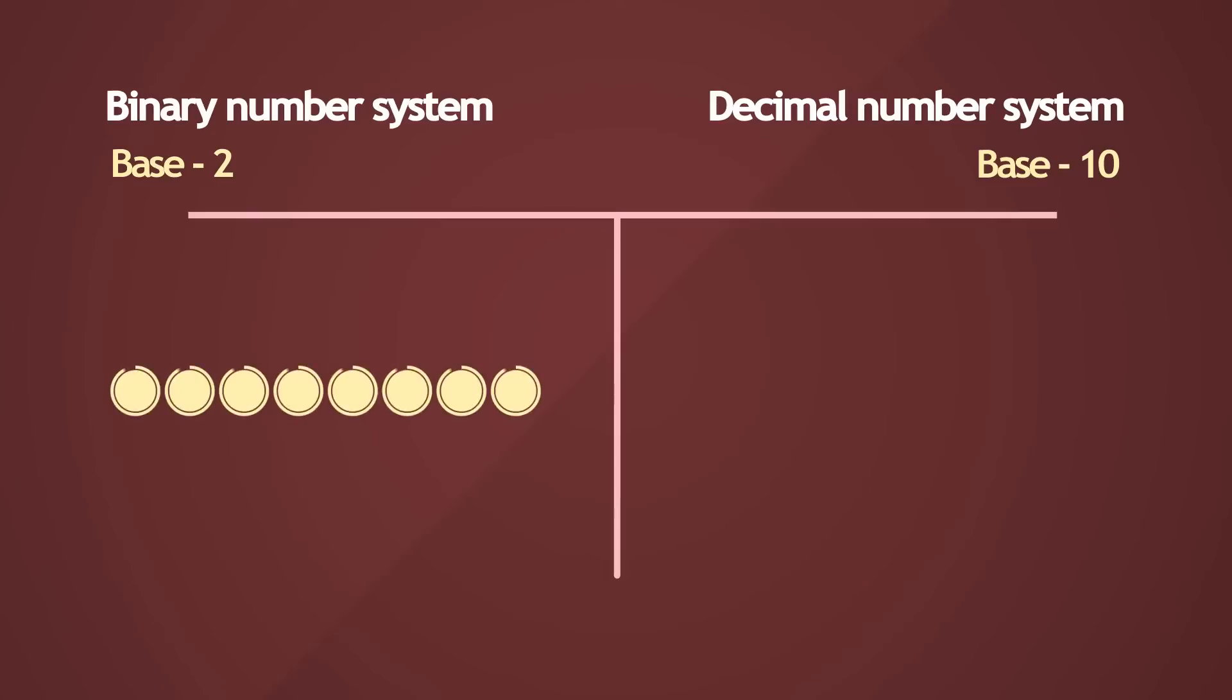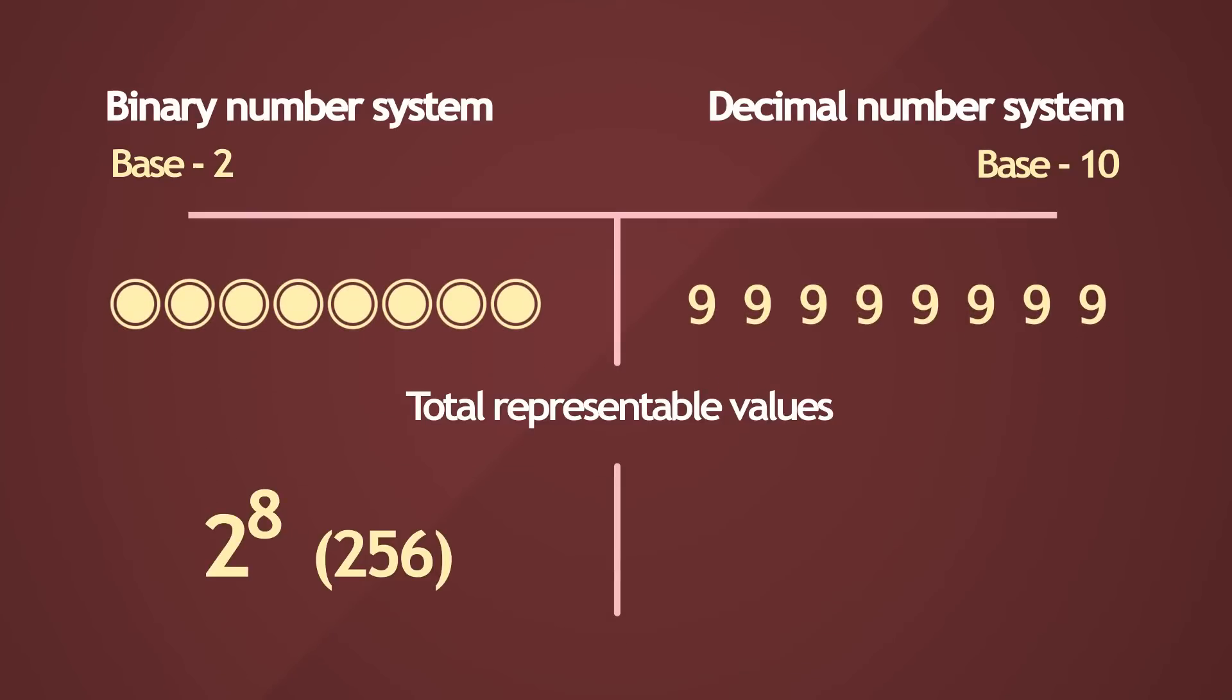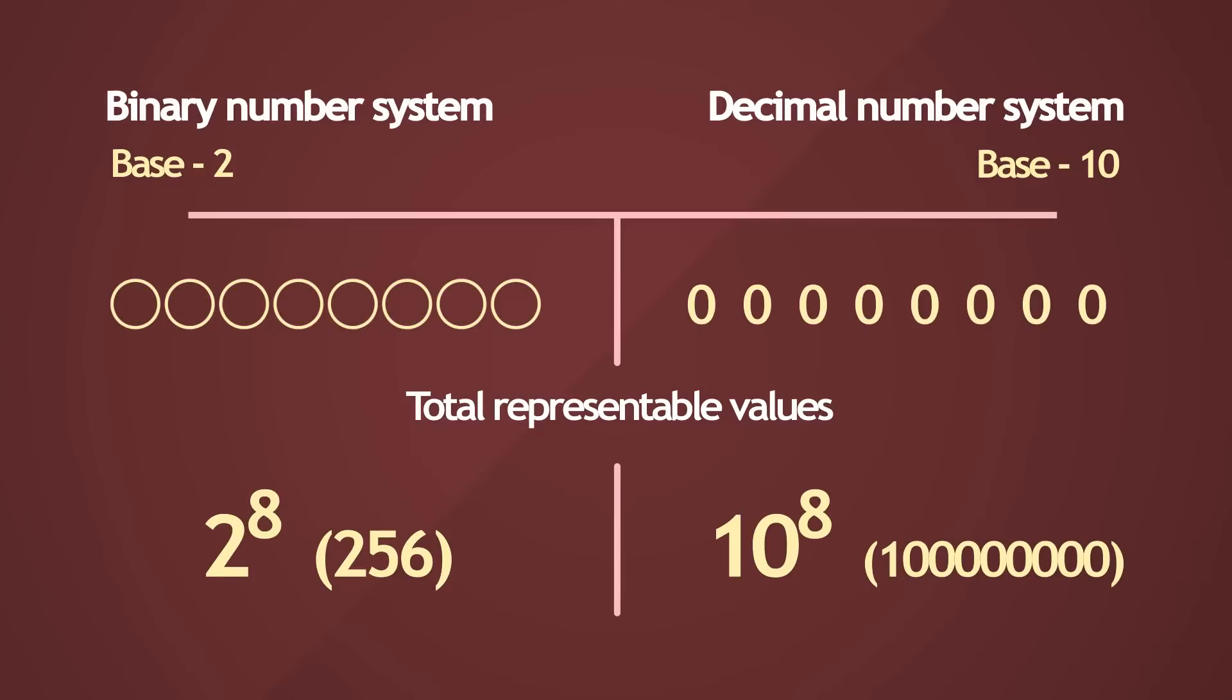Let's take an example of 8 bits. 8 bits can accommodate 2 to the power of 8 different unique states. That's 256 different values, from the 0th state when all the bits are low, to the 255th state when all the bits are high.